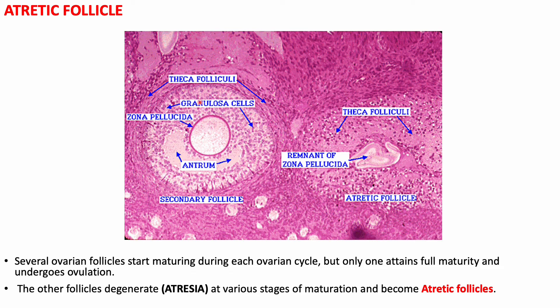Many ovarian follicles start maturing each ovarian cycle, but only one attains full maturity and undergoes ovulation. The other follicles degenerate at various stages of maturation — a process called atresia — forming atretic follicles. These atretic follicles can be seen at various stages of degeneration in the cortex.